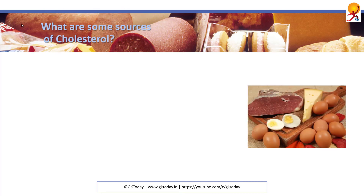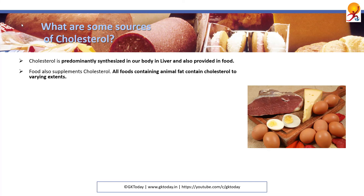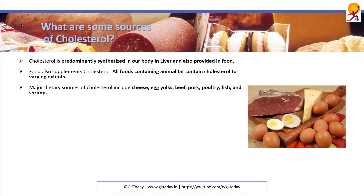What are some sources of cholesterol? Cholesterol is predominantly synthesized in our body by the liver, and it is also present in food. All food containing animal fat contains cholesterol to some varying extent. Major dietary sources of cholesterol include cheese, egg yolk, beef, pork, poultry, fish and shrimp.